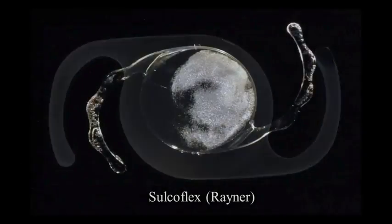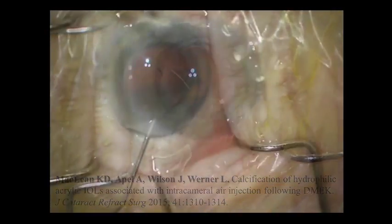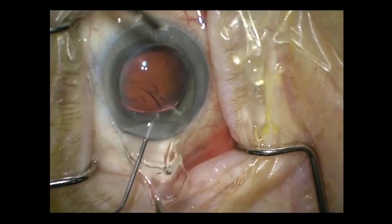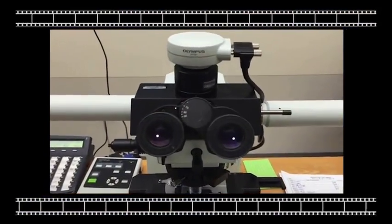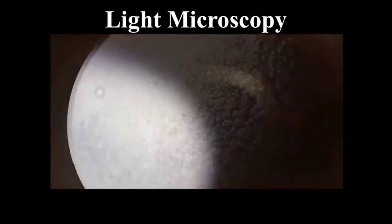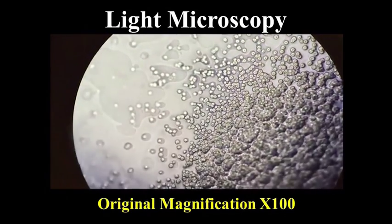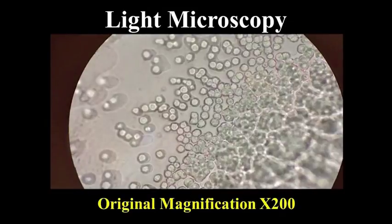Calcified deposits may be observed on the surface or within the substance of the lens. This supplementary lens calcified after a DMEK procedure. Microscopic analysis shows granules on the lens surface and subsurface.